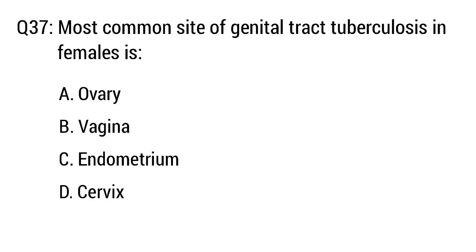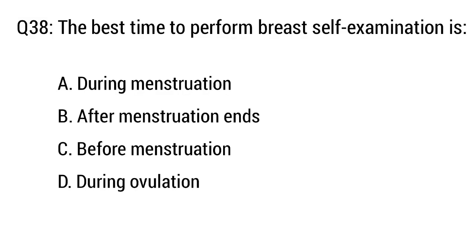Question number 37. Most common site of genital tract tuberculosis in females is — the right option is option C: Endometrium.